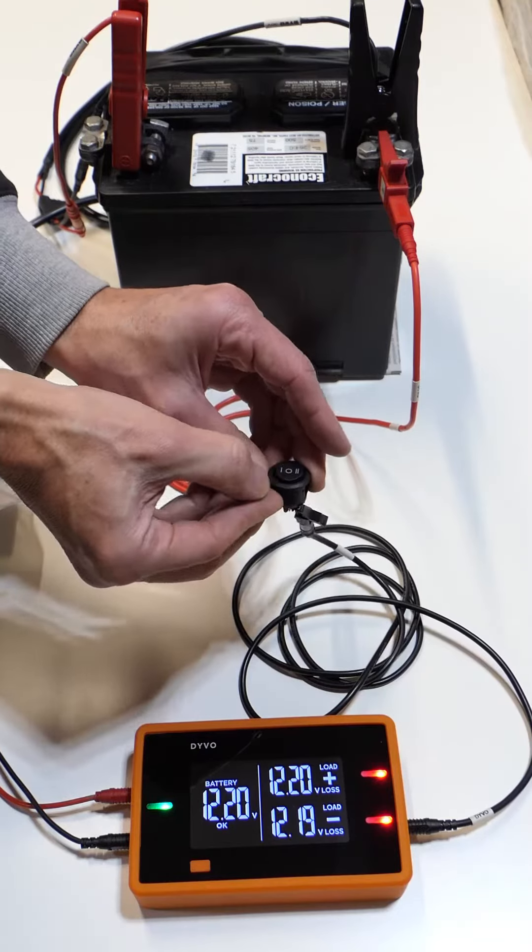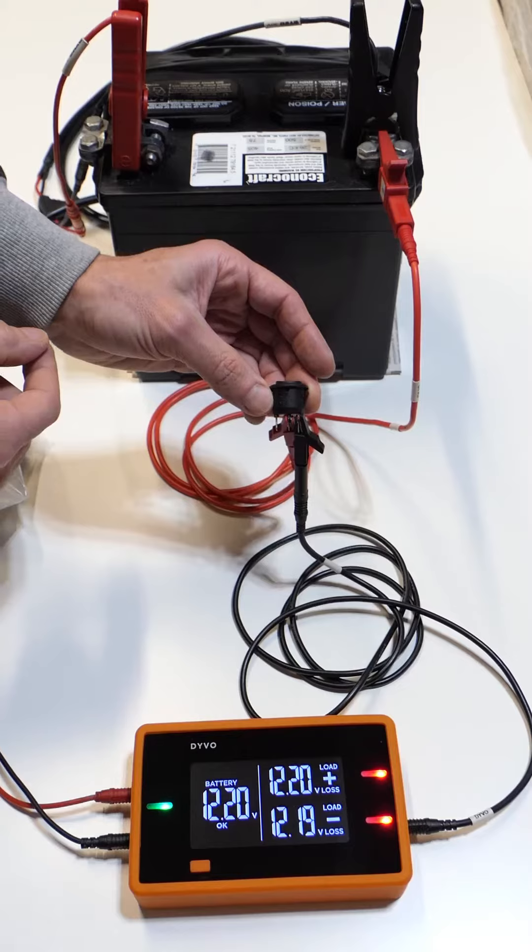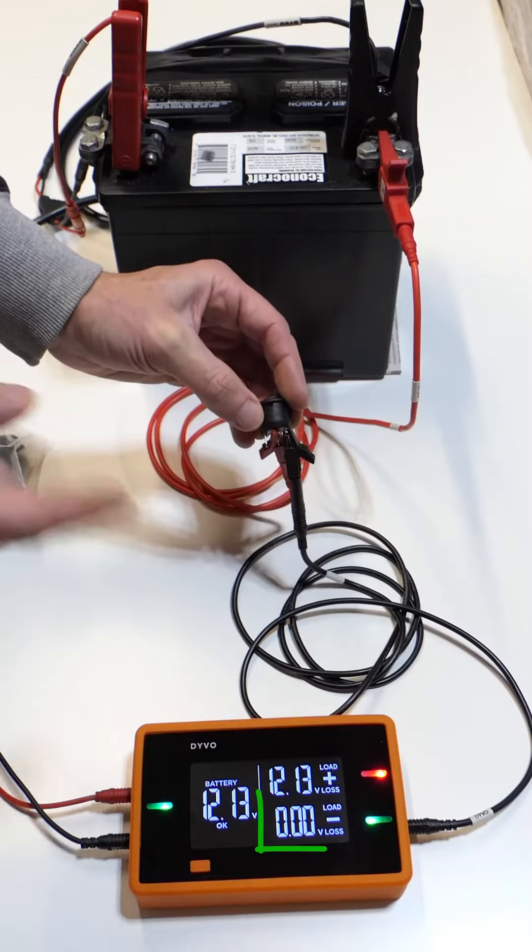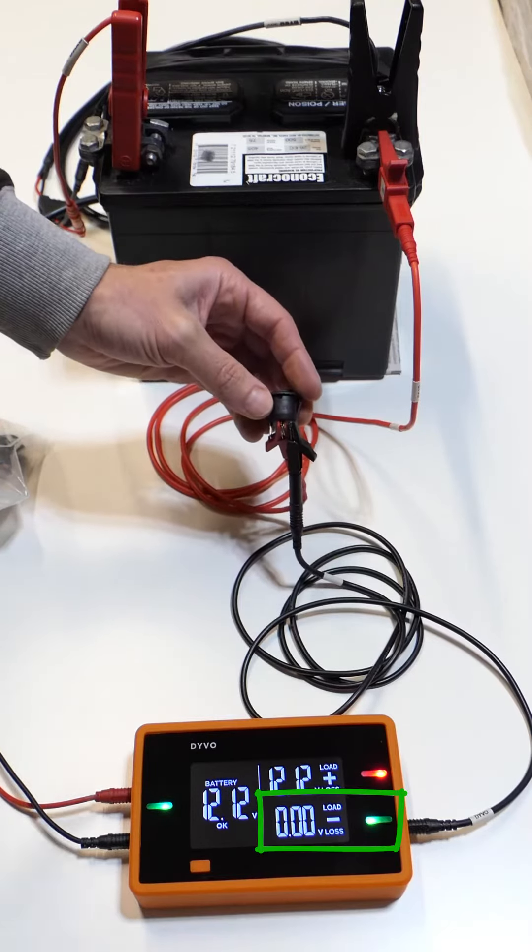I'm gonna rock the switch to the center position which again I should see that same thing, and I'm gonna move it all the way to the far position and we can see I get a green LED and zero volts. So I know that pin works.